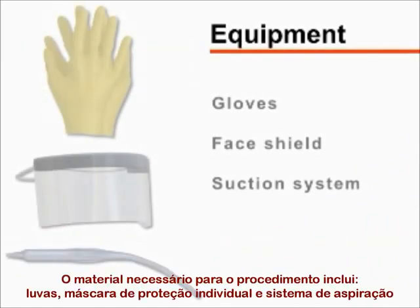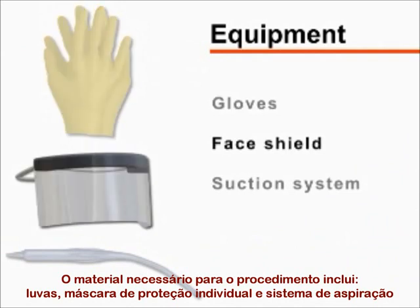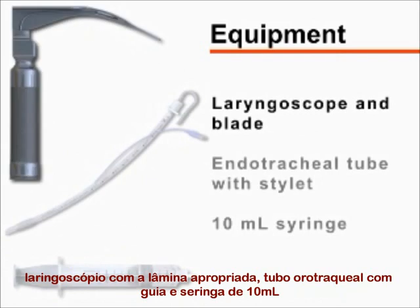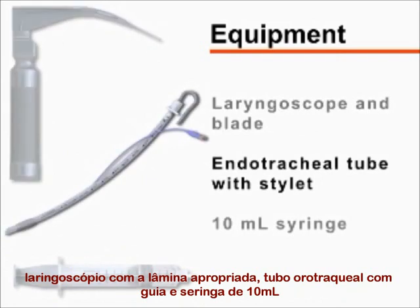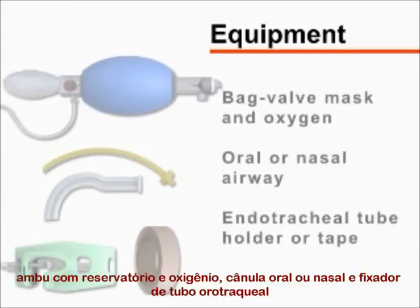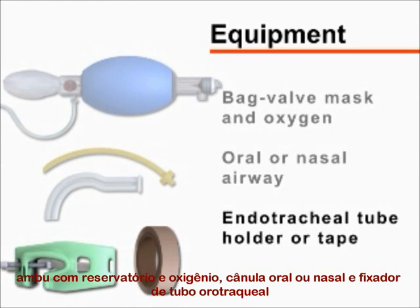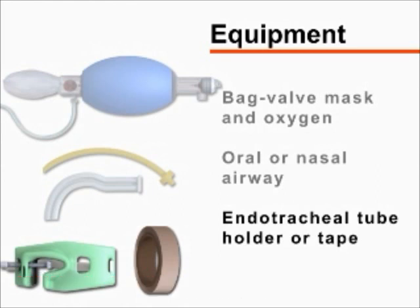Begin by gathering the required equipment. You will need gloves, a protective face shield, and a working suction system, a laryngoscope with appropriate blade, an endotracheal tube with stylet, and a 10 milliliter syringe. You will also need a bag valve mask attached to oxygen, an oral or nasal airway, and tape or an endotracheal tube holder.